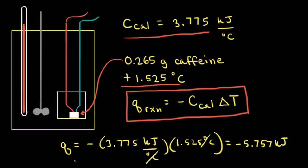Technically, this is the heat transferred at constant volume, so we can write Q sub v here. And remember, this is equal to the change in the internal energy of our system: Q_v equals delta E.